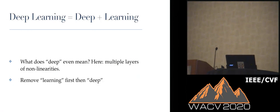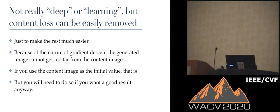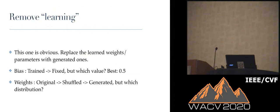We remove learning first, then deepness. And no need for content loss in practice, so we just went with the style loss. To remove learning, we found one single fixed bias 0.5 working very well.